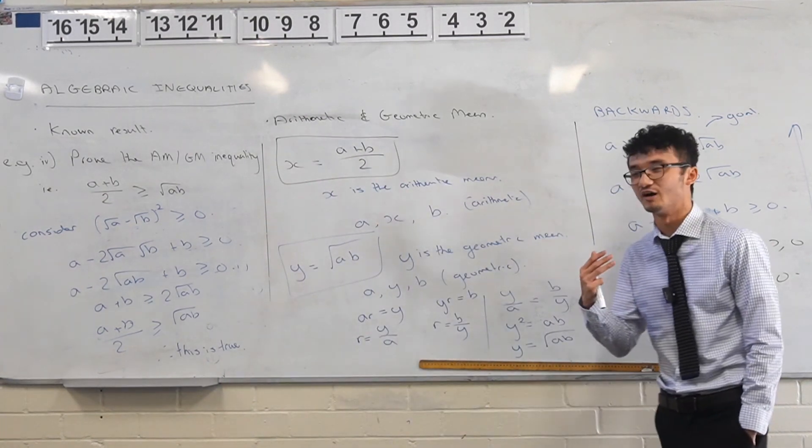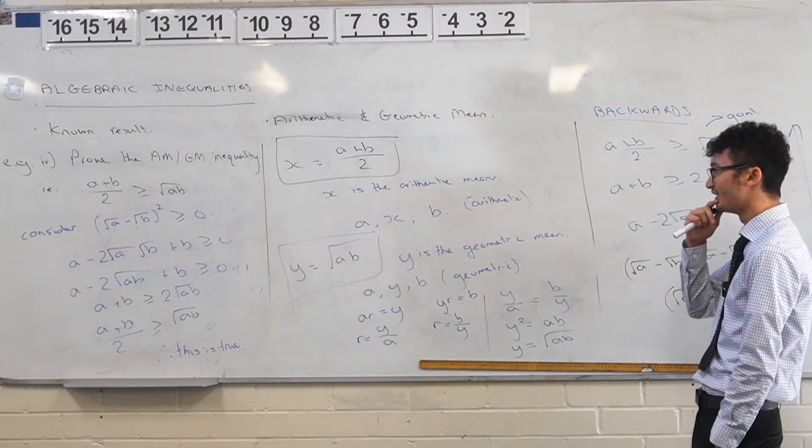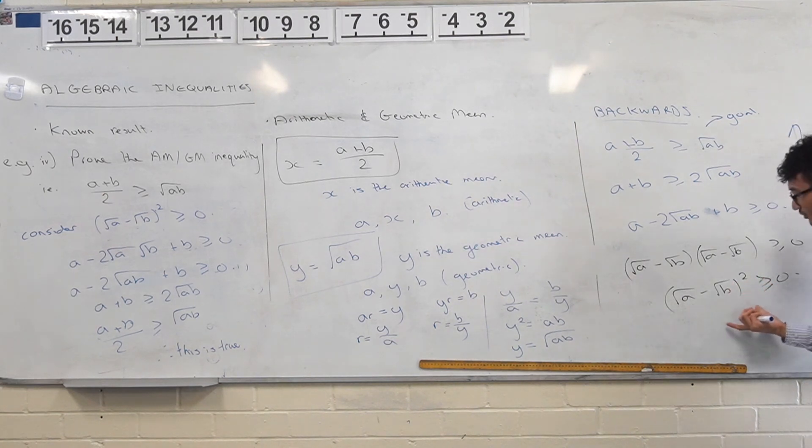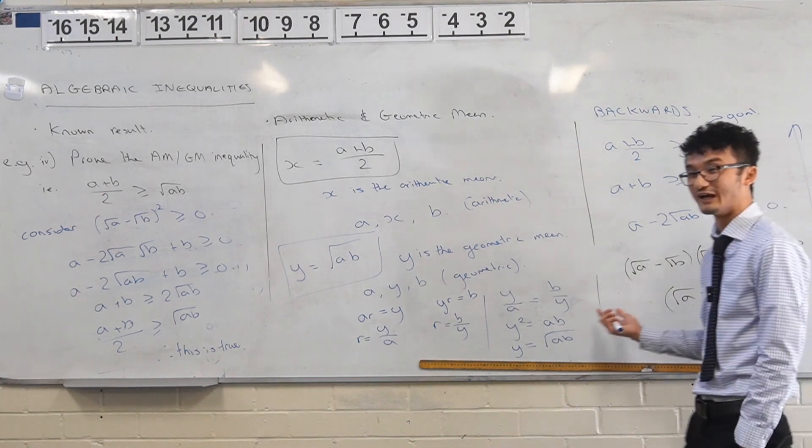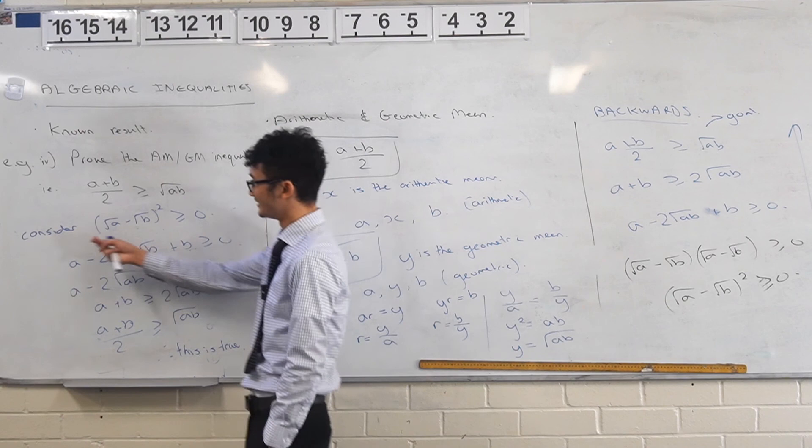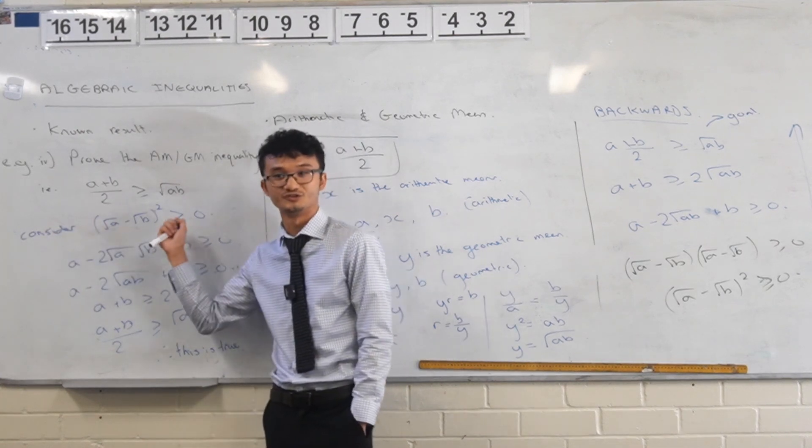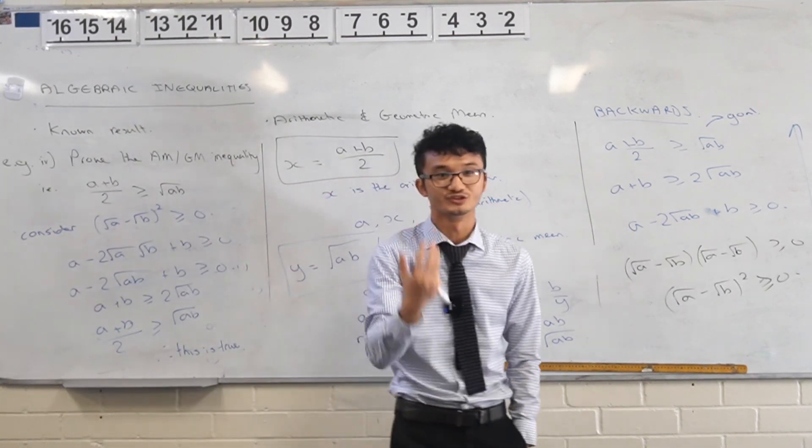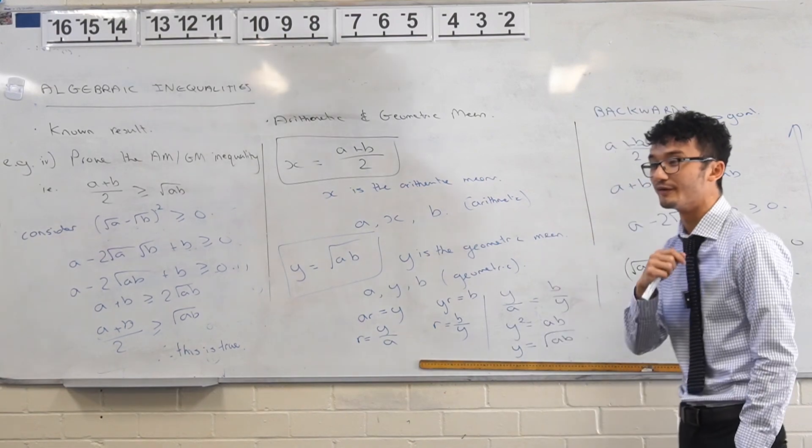So you can see the idea behind it, right? The idea is that we start with some known result which we creatively come up with, and we can use this because we know that the square of a number is always going to be greater than or equal to zero.